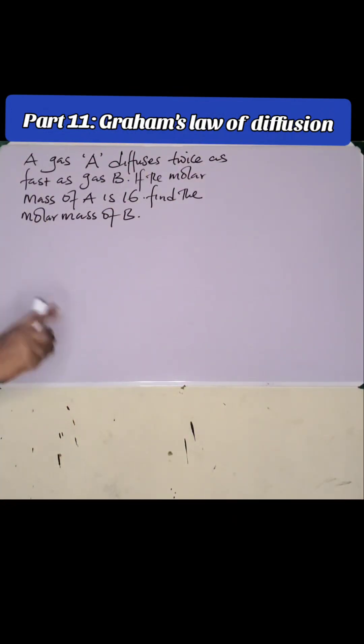A gas A diffuses twice as fast as gas B. If the molar mass of A is 16, find the molar mass of B.